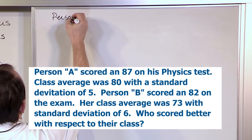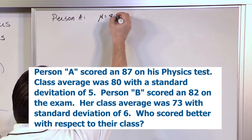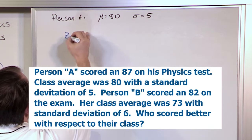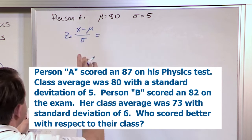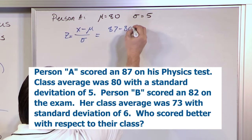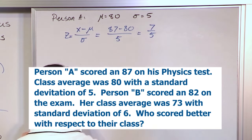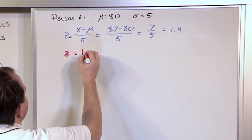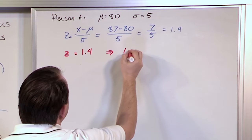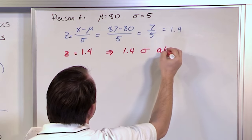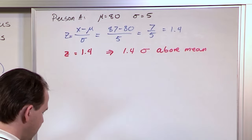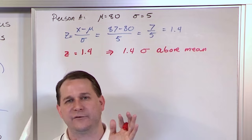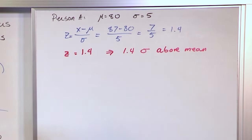For Person A, the mean is 80 and the standard deviation is 5. The Z-score is X minus the mean over the standard deviation: 87 minus 80, divided by 5. That gives seven-fifths, which is 1.4. This means Person A scored 1.4 standard deviations above the mean — they clearly did do well, better than one standard deviation above the mean, so they're standing out from the crowd packed right next to the mean.